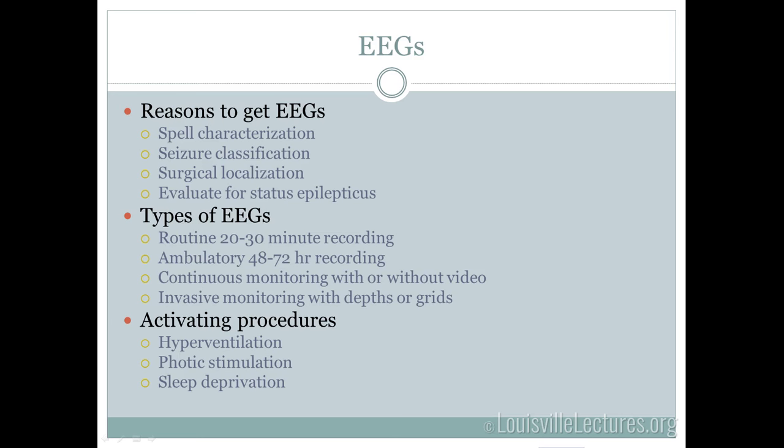Types of EEGs: a routine EEG is a 20- or 30-minute recording that looks at background brainwaves. If you're monitoring someone for 30 minutes, you're unlikely to capture a seizure, but it can show background abnormalities. Some places have ambulatory EEGs where electrodes are applied and the patient goes home for two to three days. There's continuous EEG where someone is hooked up for hours or days, with or without video. For surgical patients, if scalp electrodes are insufficient, subdural electrodes or depth electrodes placed in the hippocampus can be used, requiring a craniotomy.